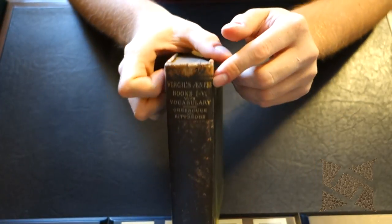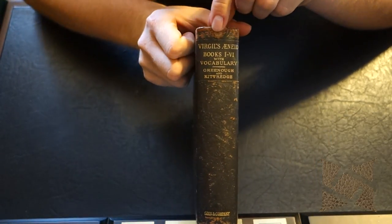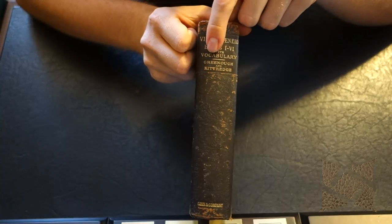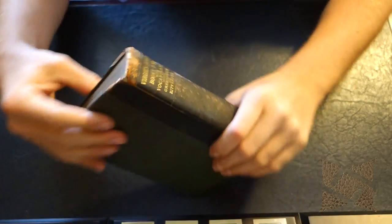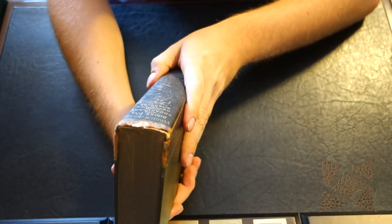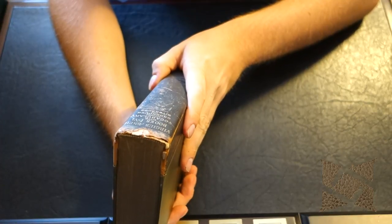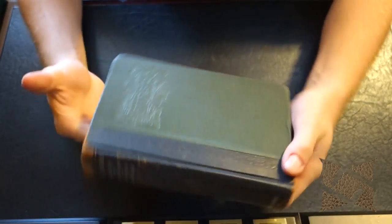You can see here it says Virgil's Aeneid books one to six with vocabulary and this is translated by Greeno and Kittredge and it's by the Gin and Company.